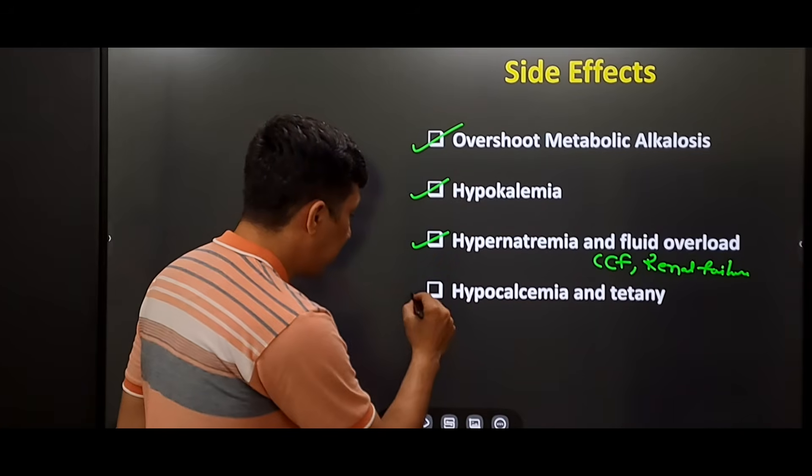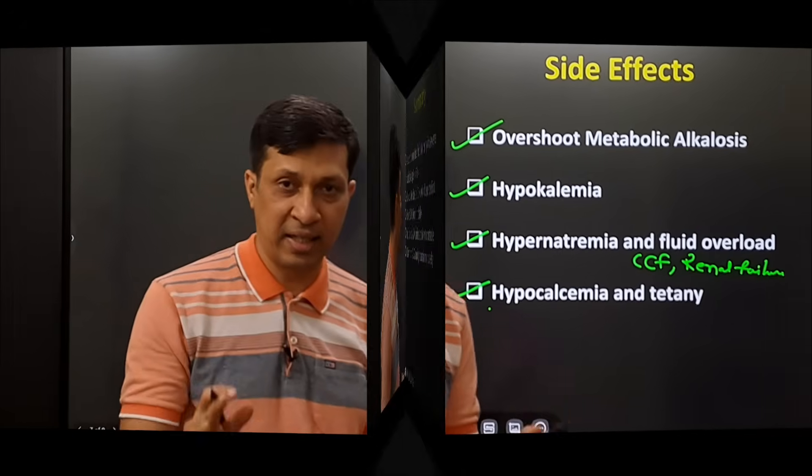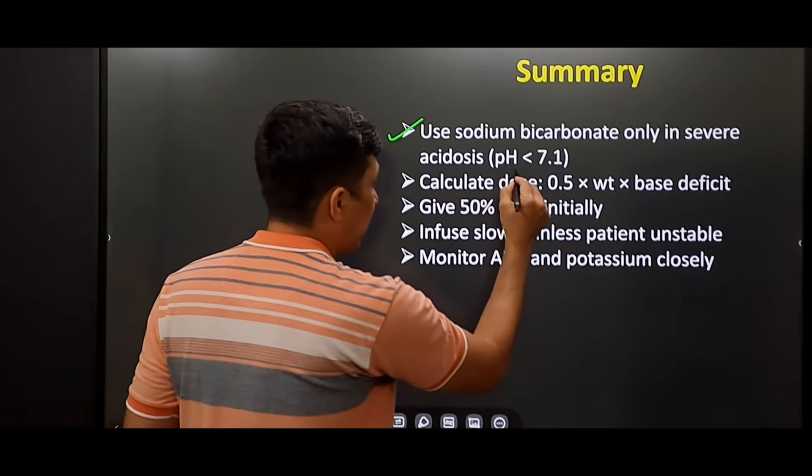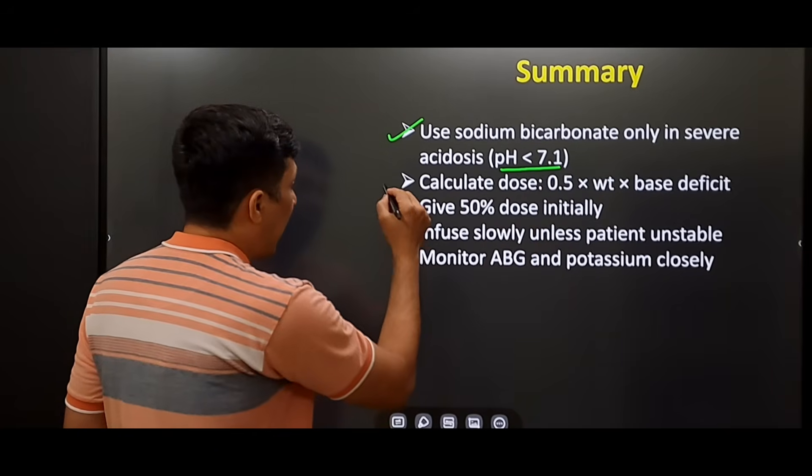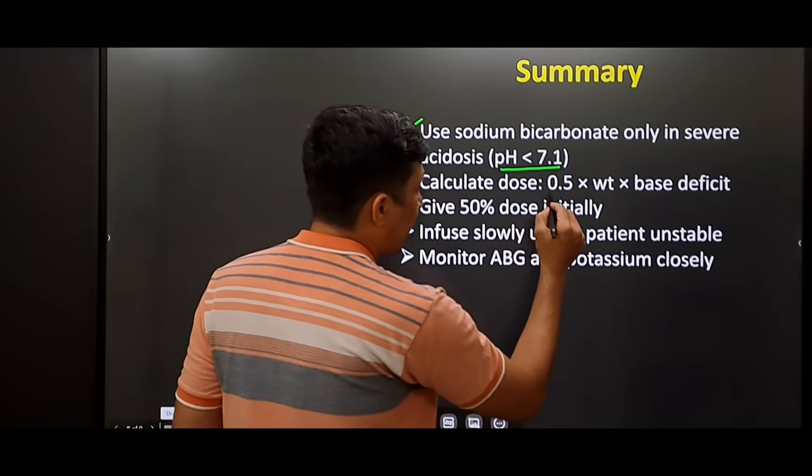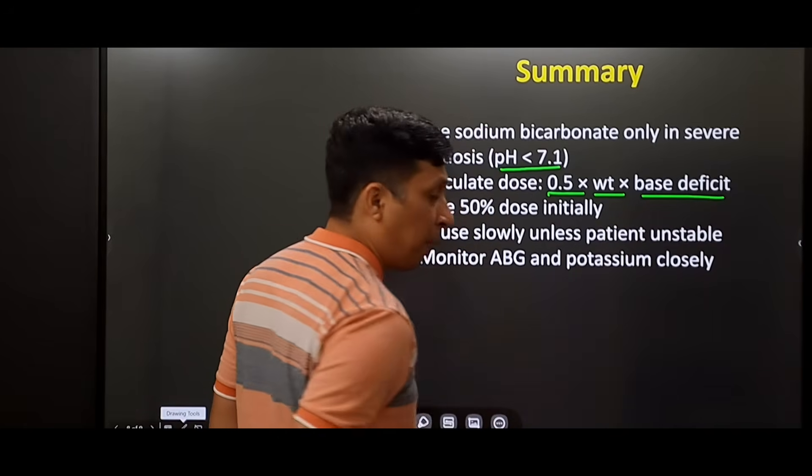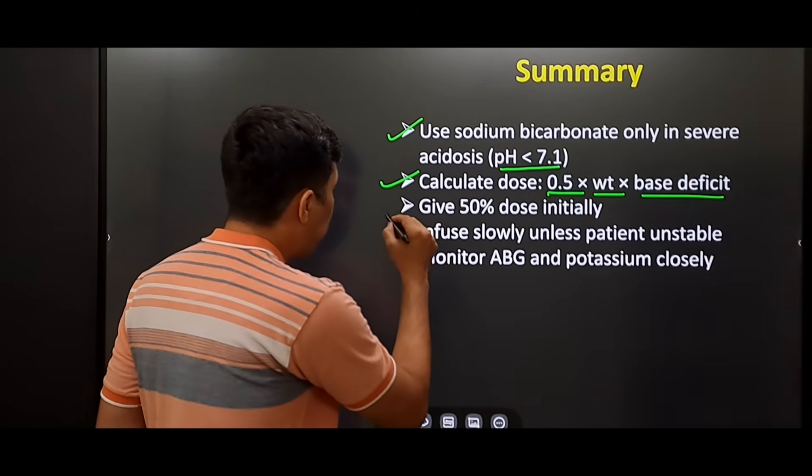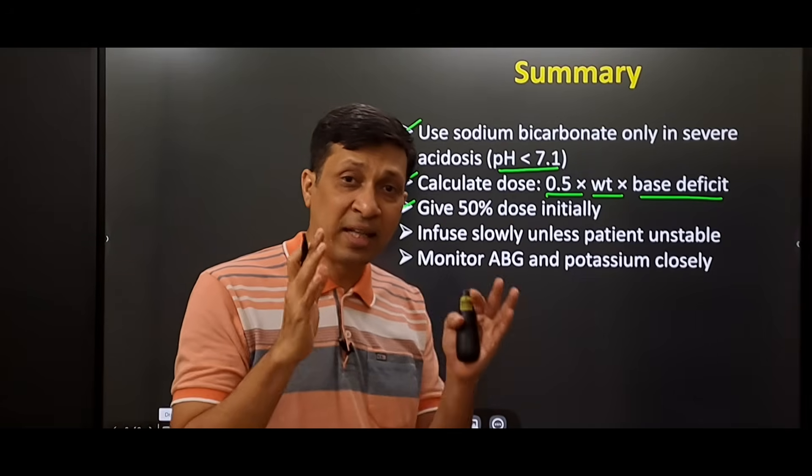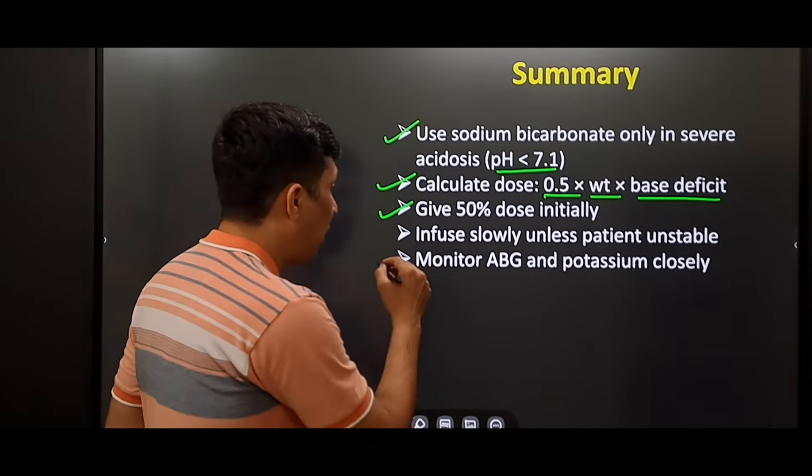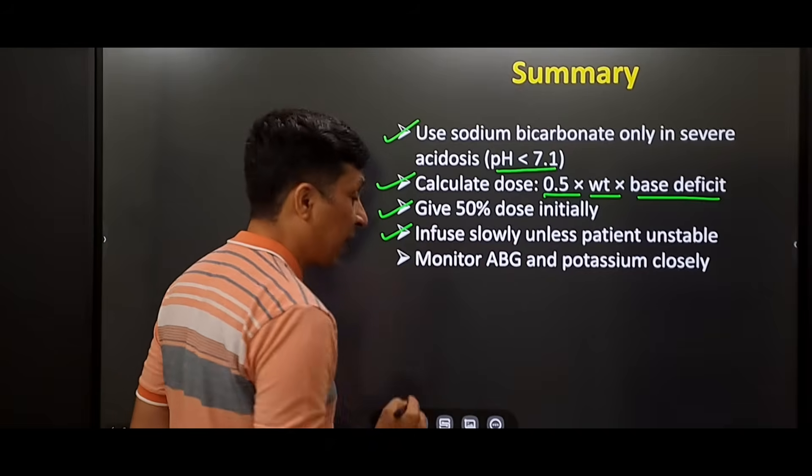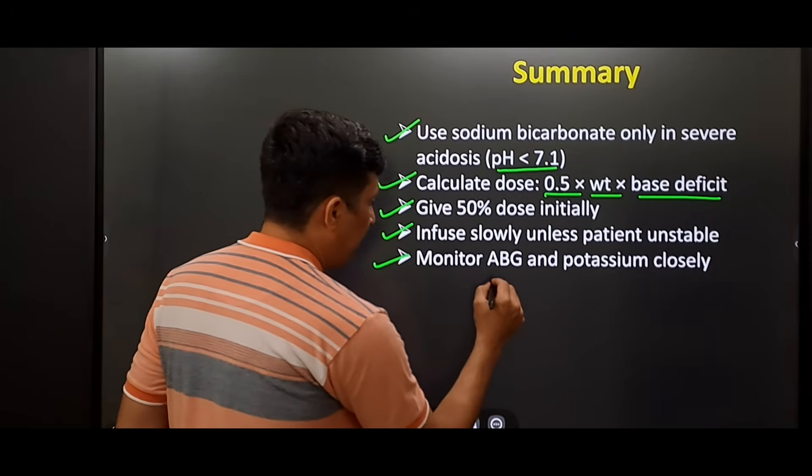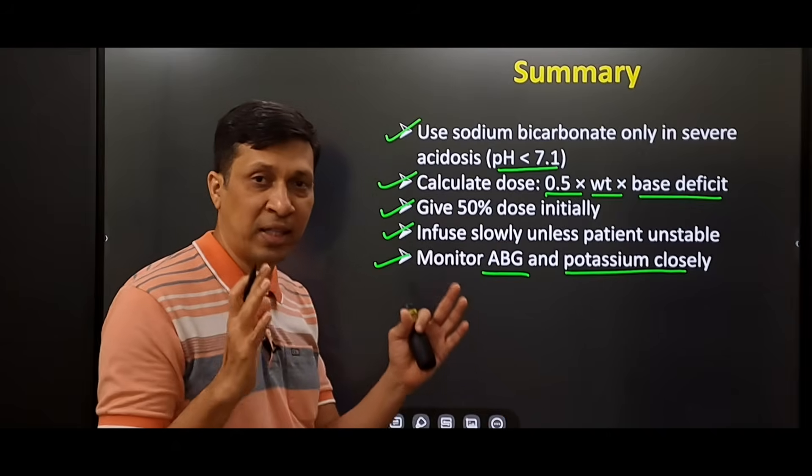Lastly, this drug can lead to hypocalcemia and tetany. So in summary, use sodium bicarbonate only in severe acidosis—pH less than 7.1. Calculate the dose by this formula: 0.5 into weight into base deficit. Base deficit is desired bicarbonate minus actual bicarbonate. Give 50% of dose initially in 4 hours and the remaining dose in 24 hours. Always give this drug slowly, except in emergencies when the patient is very unstable. Always monitor ABG and potassium very closely while giving this drug.